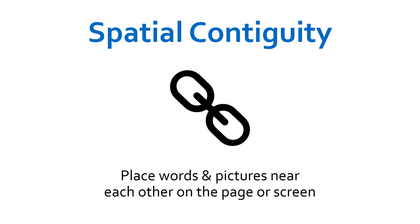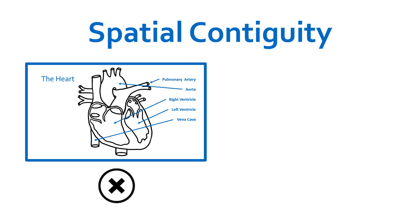This, of course, reduces the load on working memory. In the example on the left, the words are placed at too great a distance from the diagram. The giveaway is the length of the arrows and their clumsy and haphazard nature. If it's messy, it's confusing.